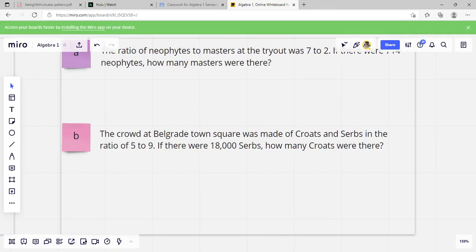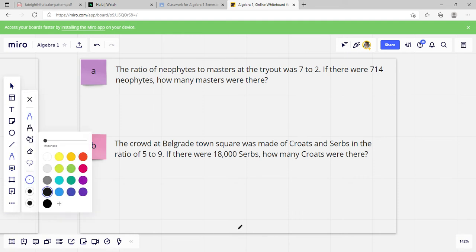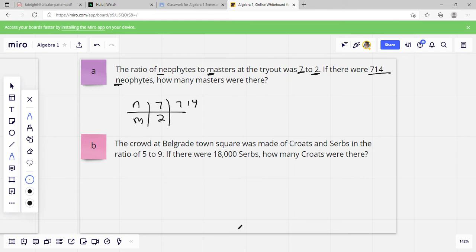The ratio of neophytes to masters at the tryout was 7 to 2. If there's 714 neophytes, how many masters were there? Sometimes they're going to give you crazy words that you don't know what they mean. It doesn't matter. We're just going to represent this with N. So we've got N to M. Neophytes, masters. The ratio of N is our first one. So that's going to be the 7. M is our second one. So that's going to be the 2. There are 714 neophytes. So that's N. So our 714 goes where our N is. And then our blank spot is on the M. That's where our X goes. So we're going to say 7 over 2 equals 714 over X.